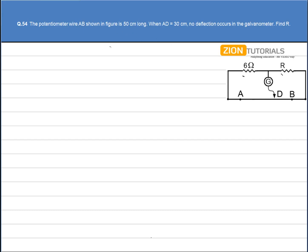Now clearly that no deflection is occurring, so therefore I can write 6 by R is equal to resistance of wire AD divided by resistance of wire DB. That is nothing but the condition of Wheatstone bridge. That is the condition for the working of potentiometer.